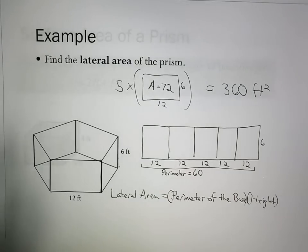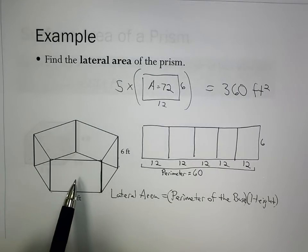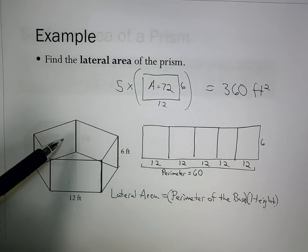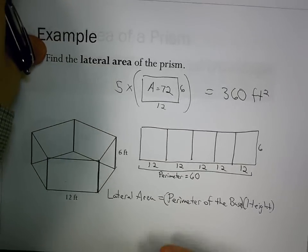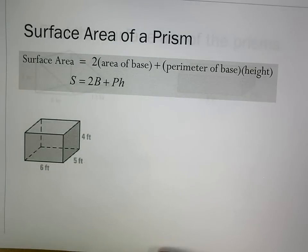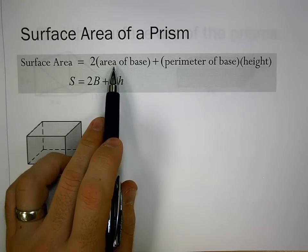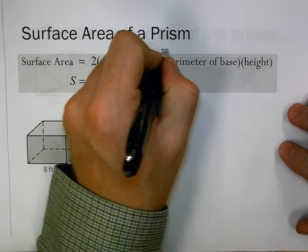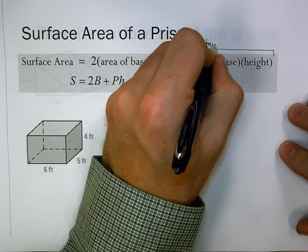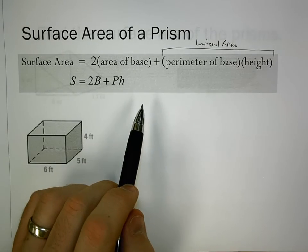This lets me say the lateral area is the perimeter of the base times the height. For surface area of all surfaces, this covers all the walls. If we find the bottom and top areas, we'd have the entire surface area. We need the two areas of the base plus the perimeter of the base times the height.